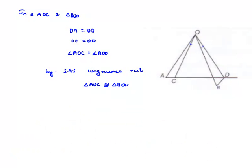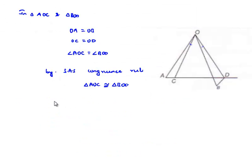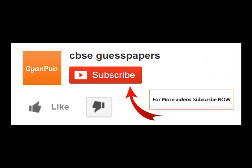Therefore, we know that when two triangles are congruent, their corresponding sides and angles are equal. Therefore, the corresponding side of AC is BD. Therefore, AC equals BD, which is our required proof.